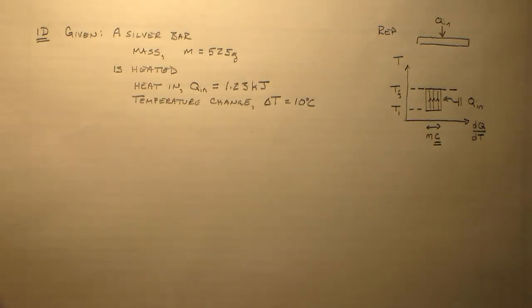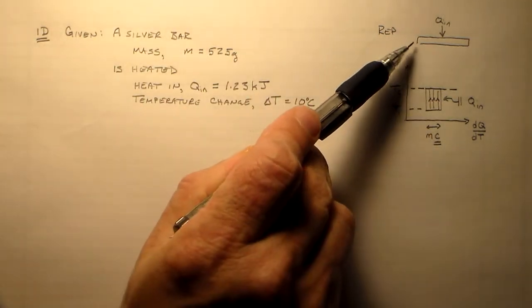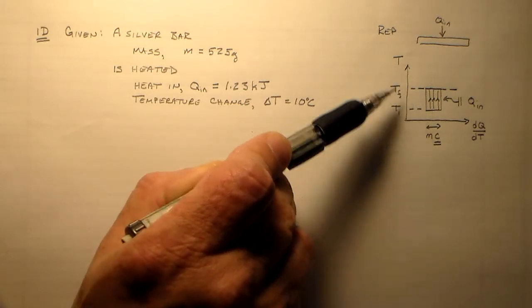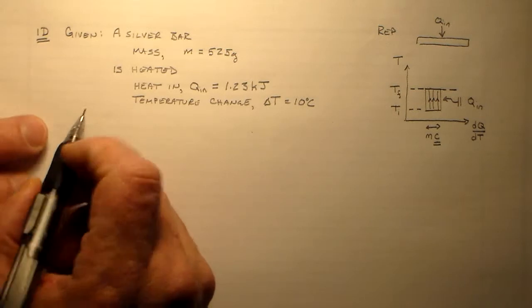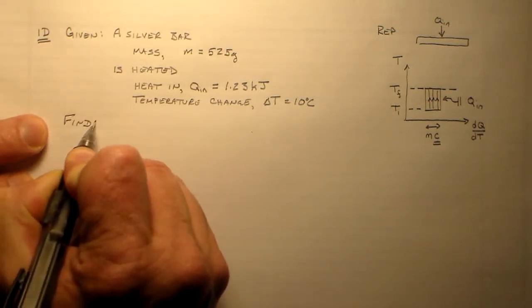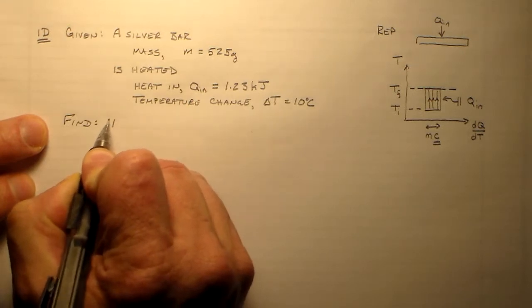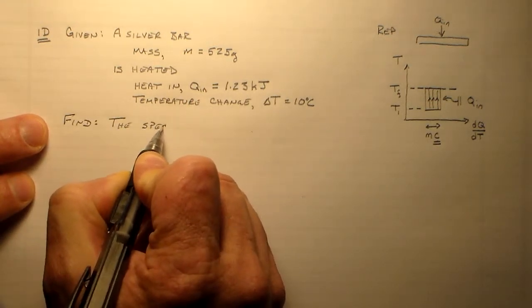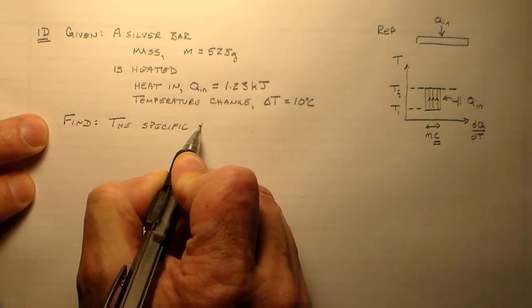So, those are the specifications for the rod and for how much heat is put in. The only thing we need to know is what do we want to find. As I said before, we want to find the specific heat of silver. We're going to find the specific heat of silver.